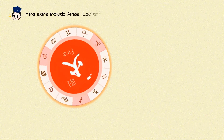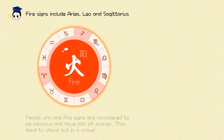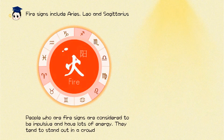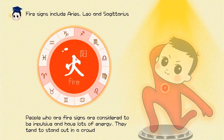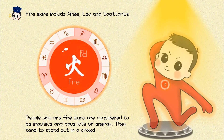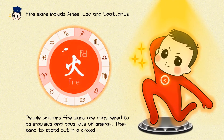Fire signs include Aries, Leo, and Sagittarius. People who are fire signs are considered to be impulsive and have lots of energy. They tend to stand out in the crowd.